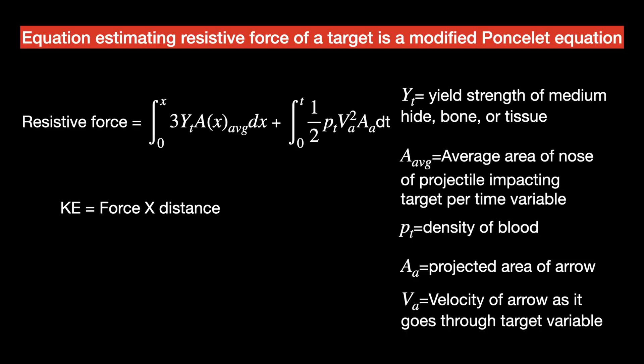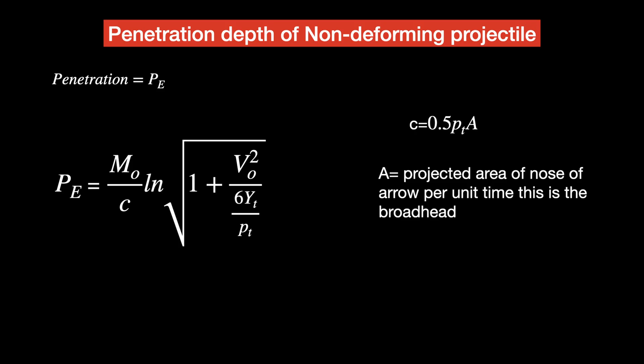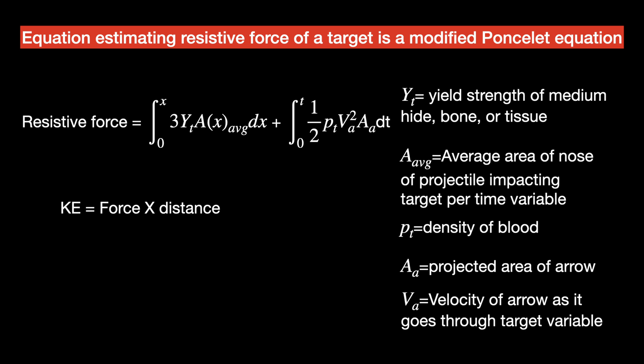We'll also look at its pitfalls. The Poncelet equation is based on the forces needed to penetrate a medium. Specifically, the solution I used was a solution for a non-deforming elongated rod, which is very similar to an arrow — with a couple of exceptions: we have a broadhead on the tip, and the arrow is able to bend or deform. That's where our penetration numbers will vary from this estimation versus the real world.